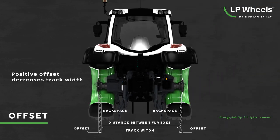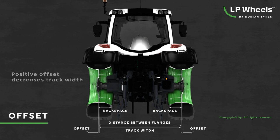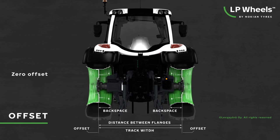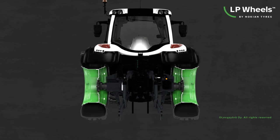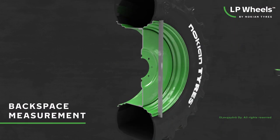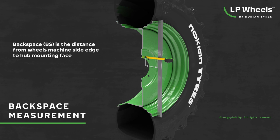Positive offset decreases the track width. At zero offset, the hub mounting face of the disc is at the centerline of the wheel. Negative offset increases the track width. If you know the size of your present wheels, the offset can also be calculated by measuring the back space.